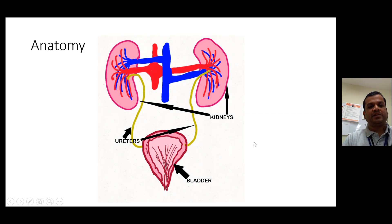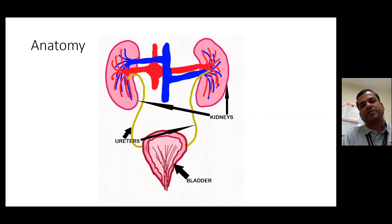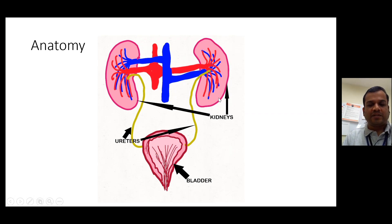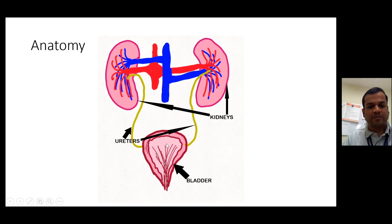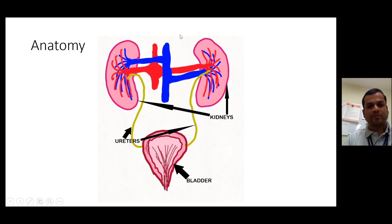Anatomy-wise, considering the urinary tract system — imagine I'm standing in front of you and you cut me open. There are three major points: first are the kidneys, then these two tubes called ureters which carry waste products from the kidney down to the bladder — and that finger-like structure is called the urinary bladder.